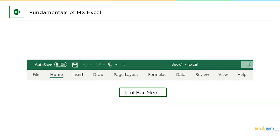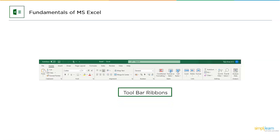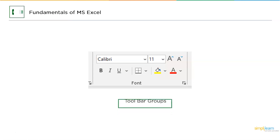Once you get started with a sheet, you'll have more options. There's the toolbar menu at the top, which includes: File, Home, Insert, Draw, Page Layout, Formulas, Data, Review, View, and Help. These are the tools you'll use to work on your data. Additionally, there's the toolbar ribbon — when you select any option from the toolbar, a corresponding ribbon appears below it.